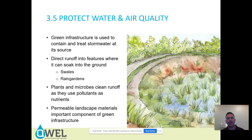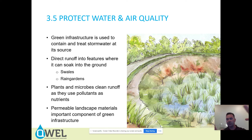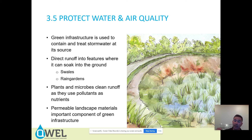Green infrastructure is used to contain and treat stormwater at its source. Direct runoff into features where it can soak into the ground — swales, rain gardens, et cetera. On a residential site this can be as simple as a lowered area where water can go, with a way for it to get somewhere else if it fills up completely. We don't want to flood houses, but we do want to slow that runoff down, spread it out, and sink it into the ground. Plants and microbes clean that runoff as they use pollutants as nutrients — the microbes gobble up those pollutants, release nutrients, and store carbon in the ground.